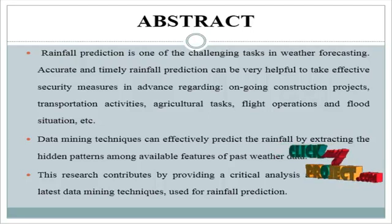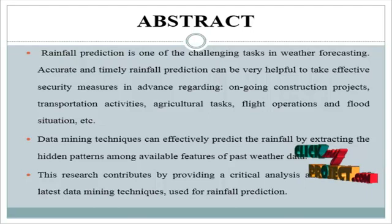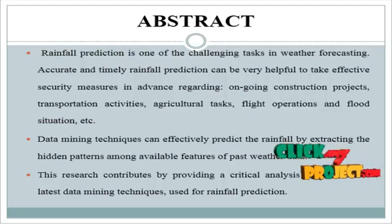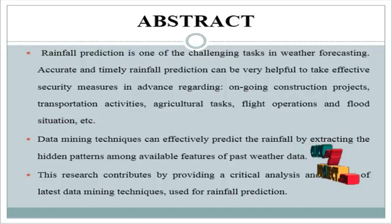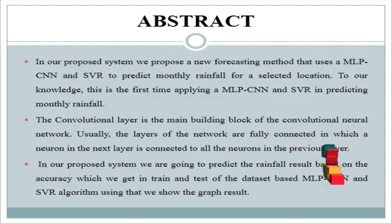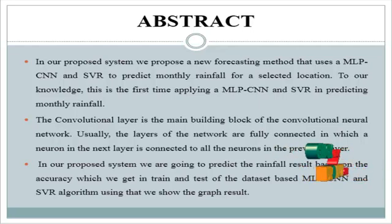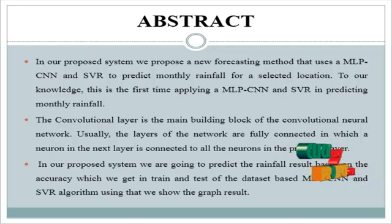Data mining techniques can effectively predict rainfall by extracting hidden patterns from all available features of weather data. This research contributes by providing a critical analysis of the latest data mining techniques used for rainfall prediction. In our proposed system, we propose a new forecasting method that uses a multi-layer perceptron (MLP) and support vector regression to predict monthly rainfall for a selected location.